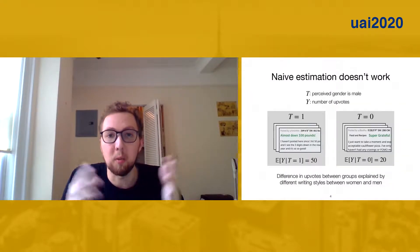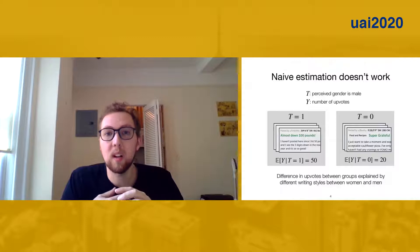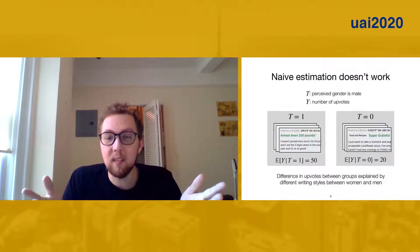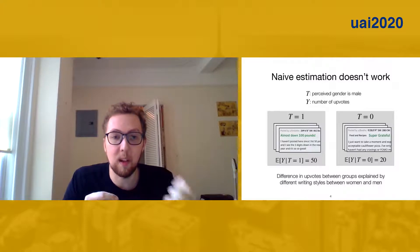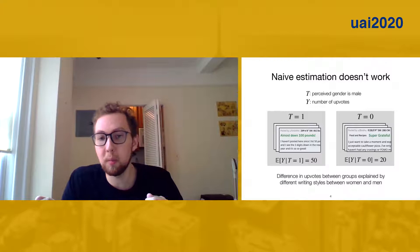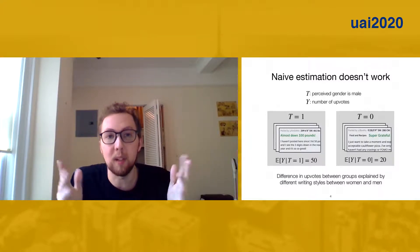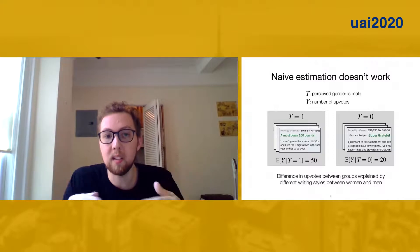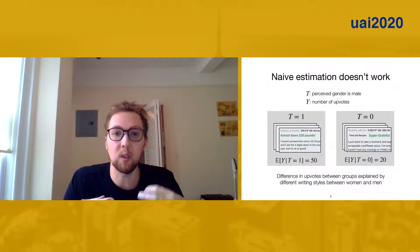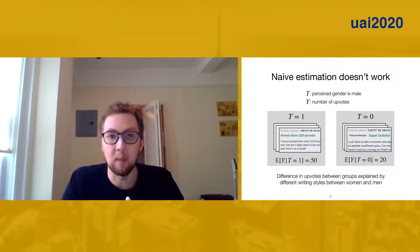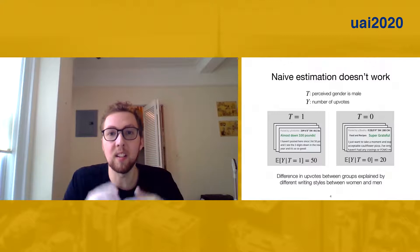So we want this causal effect of the treatment on the outcome. There's a really naive thing that we could do, which is just look at the difference in expected outcomes for male-labeled posts and for female-labeled posts. But of course, correlation is not causation, and so that doesn't work.